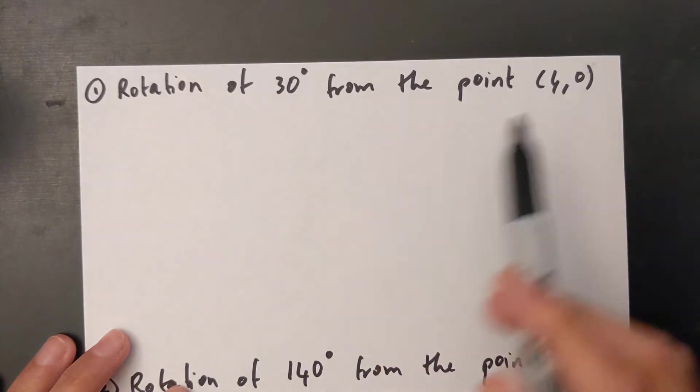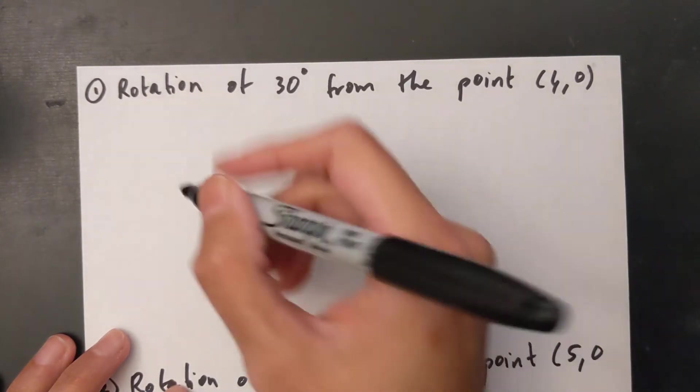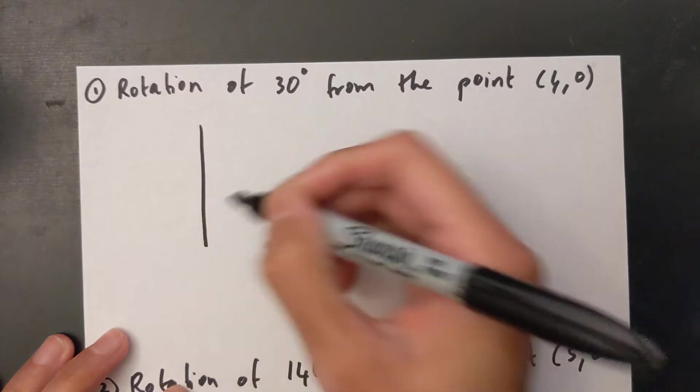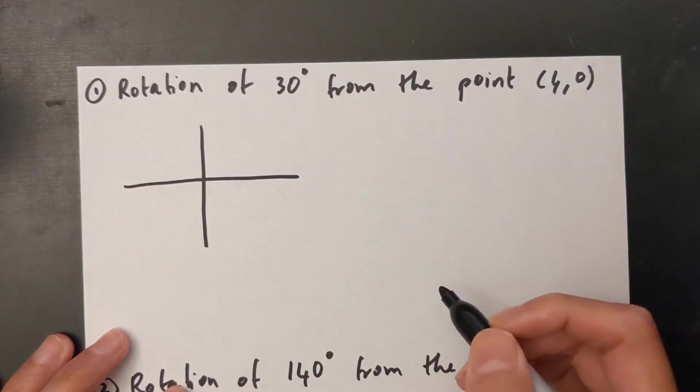In this first case we have a rotation of 30 degrees from the point, so I'm going to draw that on my axis.